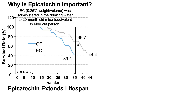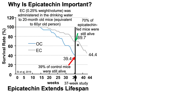In this study, epicatechin was administered in the drinking water to 20-month-old mice, which — considering a 40-month maximum lifespan in mice — is equivalent to about a 60-year-old person. Old controls (OC) received no epicatechin; the EC group received epicatechin. After 37 weeks, only 39% of the old controls were still alive, whereas 70% of the epicatechin-supplemented mice were still alive. Even seven weeks after the 37-week study ended, 44% of the epicatechin mice were still alive, demonstrating the lifespan-extending effect of epicatechin.